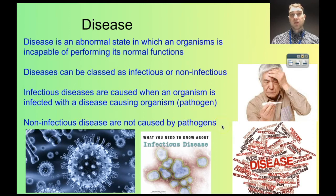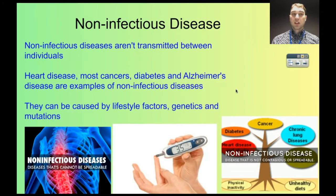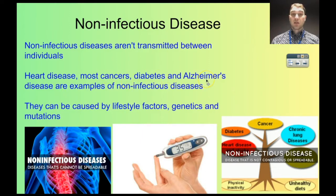Non-infectious diseases aren't caused by pathogens. They can't be passed on from one person to another — non-infectious diseases can't be transmitted between people. Some examples are heart disease, most cancers, diabetes, and Alzheimer's disease. They can't be transferred easily from one person to another and they're not transmitted by an organism, so because of that they're non-infectious.